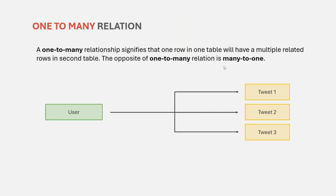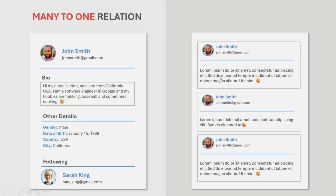We also have a one-to-many relation. In a one-to-many relation, one row in one table will have multiple related rows in the second table. For example, let's say we have a user table and a tweet table. One user can make multiple tweets. So one user in the user table will have multiple related tweets in the tweet table — as you can see, one user can have multiple tweets, so there is a one-to-many relationship between the user and his tweets. In the opposite direction, we have a many-to-one relationship — many tweets in the tweet table will have one related user in the user table. We will see when to use one-to-many vs. many-to-one when we start implementing relationships between the entities.